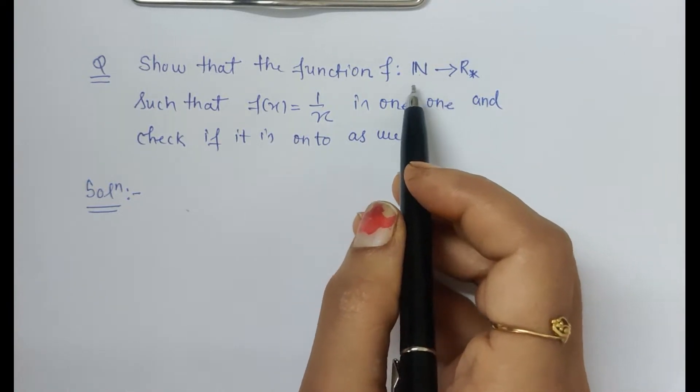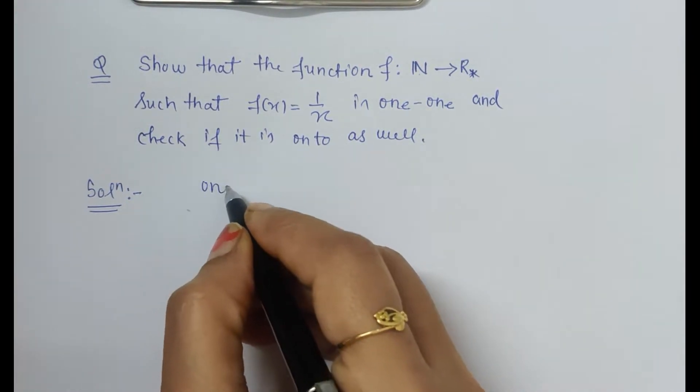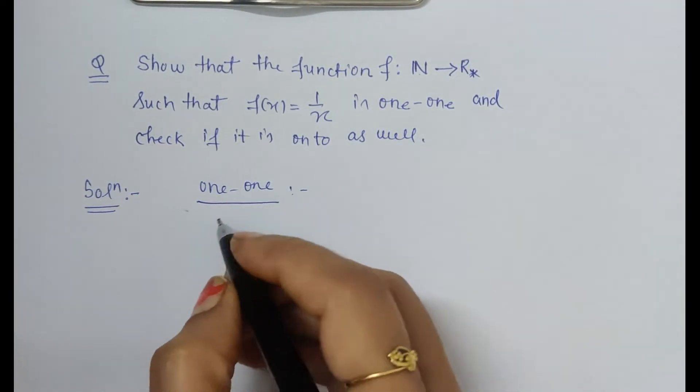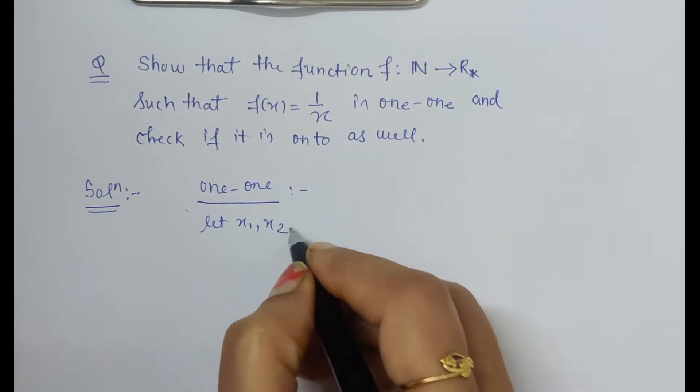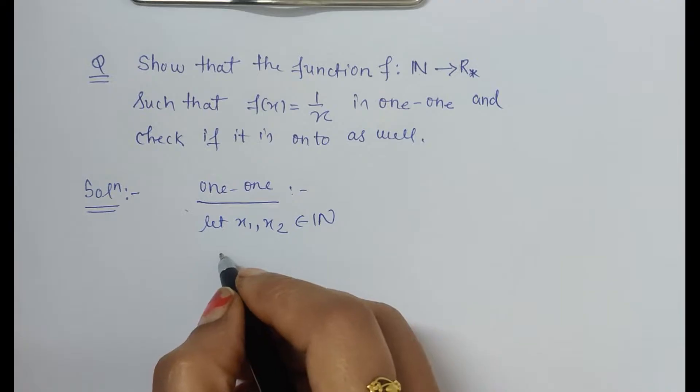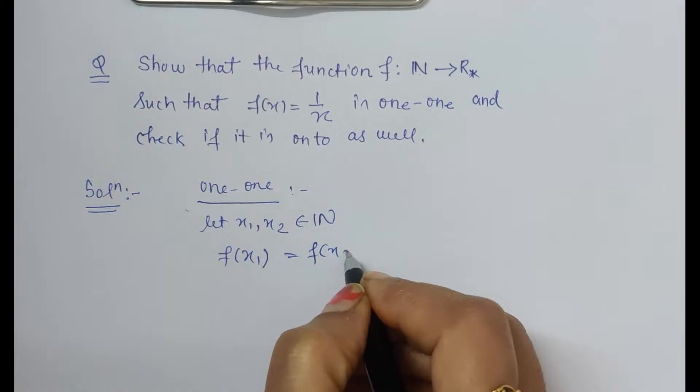So let's check if it is one-one and onto. First we will start with one-one. For one-one we have to consider x1, x2, two elements in the domain. So here we assume f(x1) is equal to f(x2).